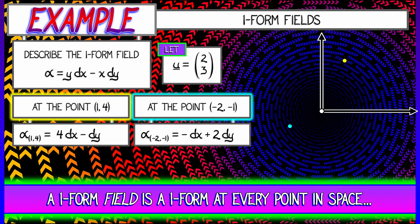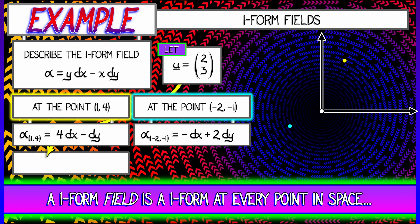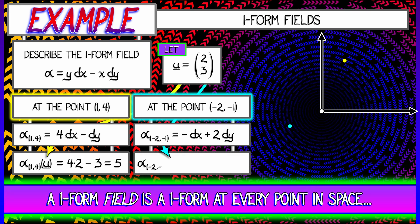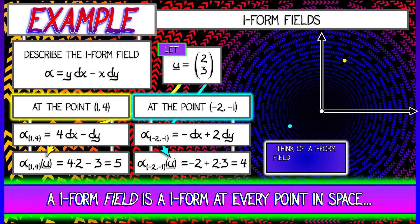And then if I feed it a vector, let's say the vector u given by 2i + 3j, I'll get different scalars at different locations. So at the point (1, 4), if I feed u to the one-form there, I'm going to get 4 times 2 minus 3 times 1, that is 5. But if I feed that exact same vector u into the exact same one-form field, but at a different location, at (-2, -1), I'm going to get -2 + 2 times 3, that's equal to 4.